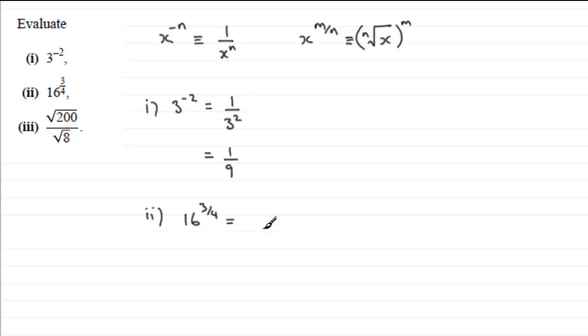So for this one, we take the fourth root of 16, and then we raise all of this to the power 3. And the fourth root of 16, well, that's going to be 2. 2 to the power 4 would give you 16. And then we cube that. 2 cubed is going to be 8.